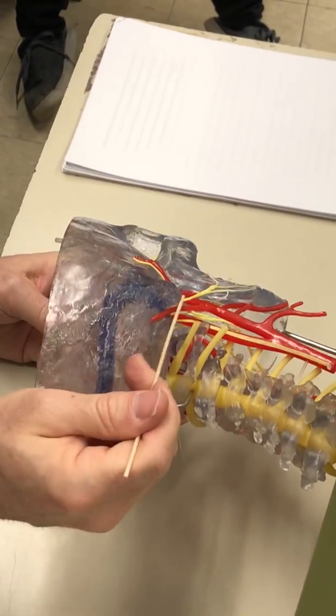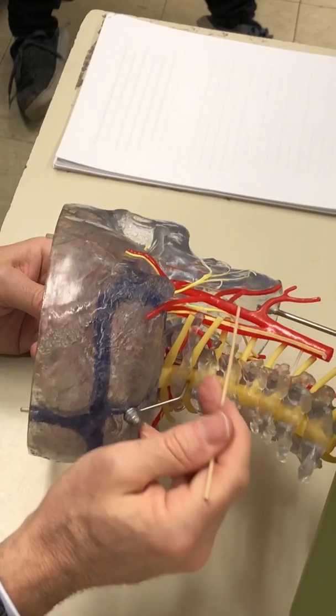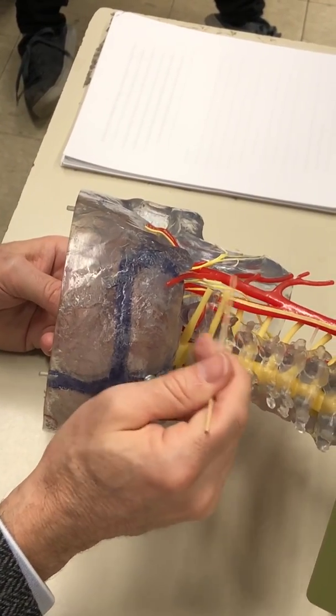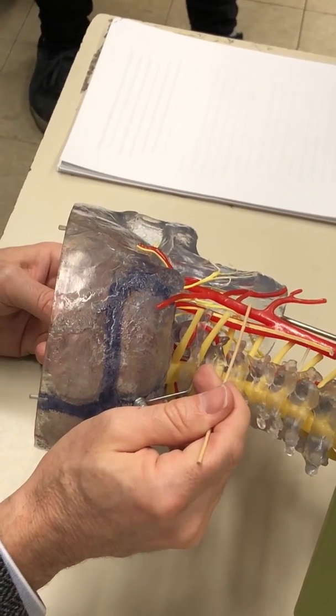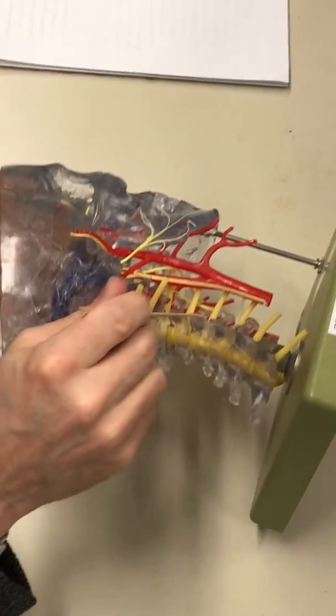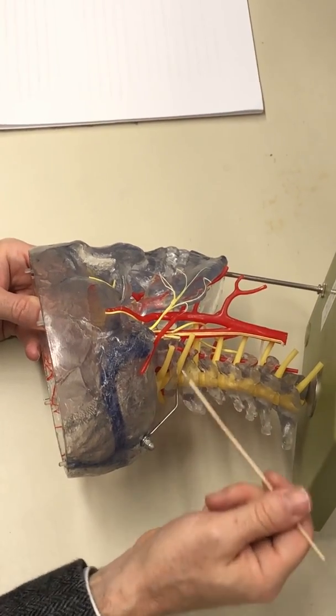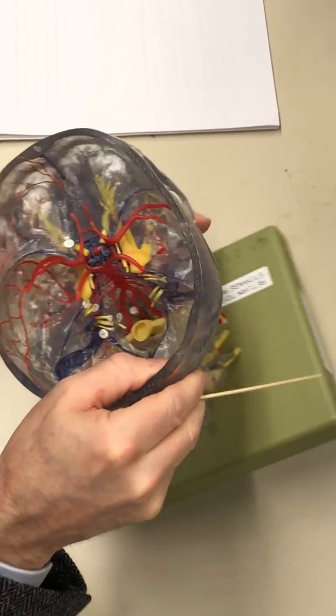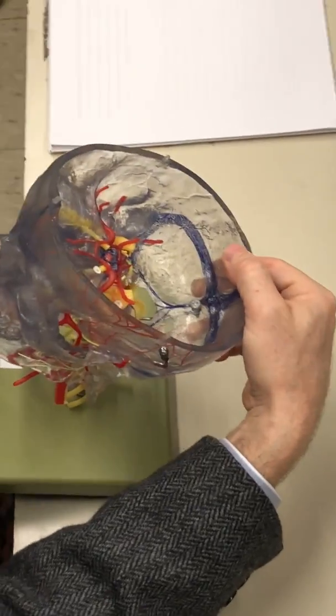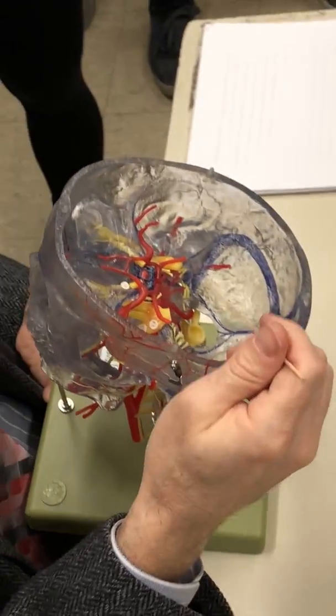Temporal and occipital arteries, all branches off of the external carotid. Here we see the vertebral running through the bones. That's gonna go through the foramen magnum and it's gonna meet up with the internal carotid.